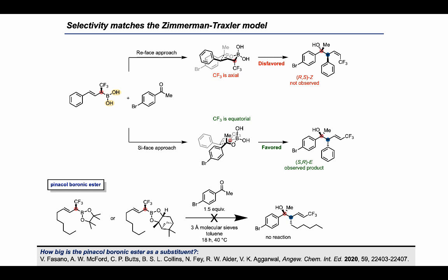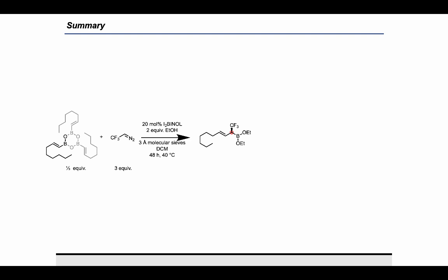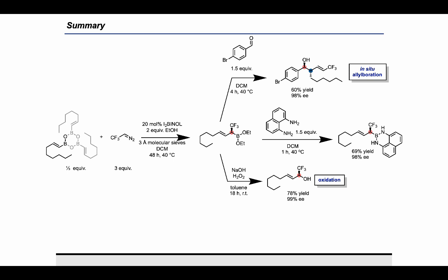To summarize, we have developed an asymmetric homologation reaction to generate alpha-chiral allyl boronates. We can protect and isolate these allyl boronates using diaminonaphthalene. Alternatively, we have shown some in-situ applications, namely allyl boration and oxidation with sodium peroxide. The isolated allyl-BDAN compounds can be hydrolyzed to give free alpha-chiral allyl boronic acids, which can be used in a broad scope of allyl borations under mild conditions.